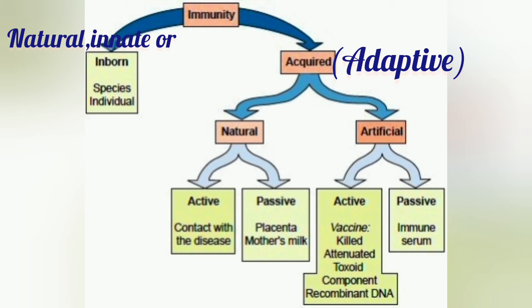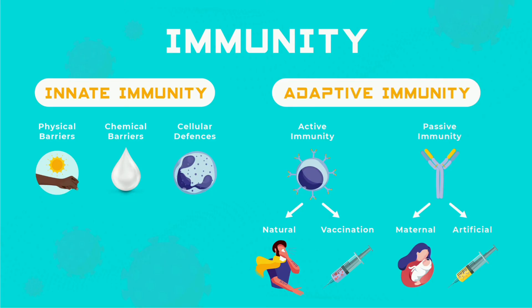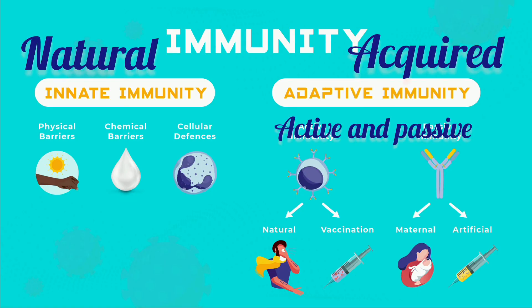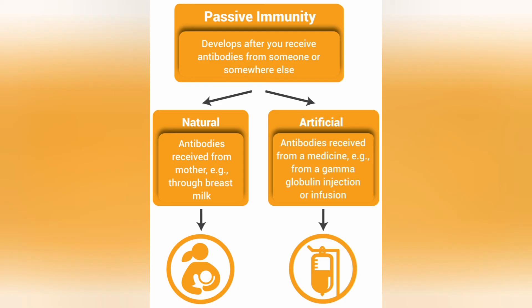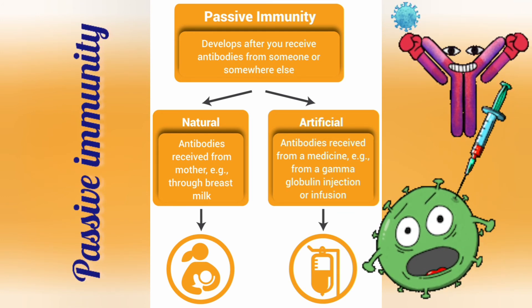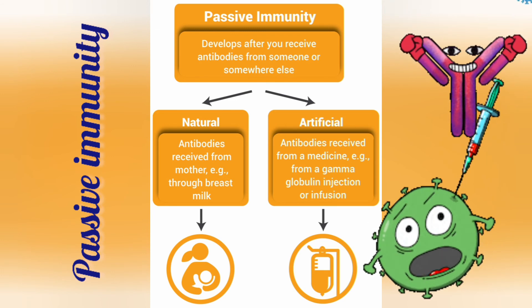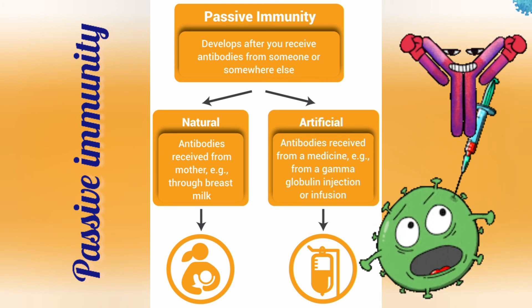Now what do you mean by acquired immunity? The immunity is acquired by an individual during his lifetime by producing antibodies in the body. It is of two types: active and passive. Active immunity is when the body takes an active part in the formation of antibodies to develop resistance against disease. In passive immunity, the body does not play an active role; instead, it receives ready-made antibodies to produce immunity.